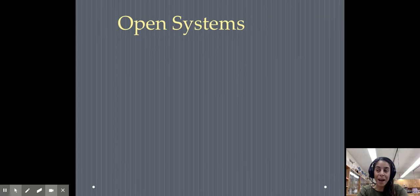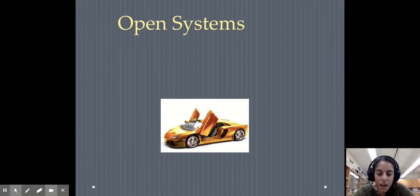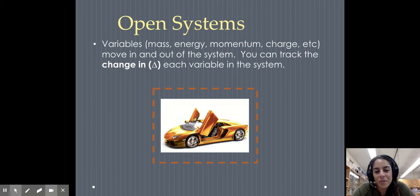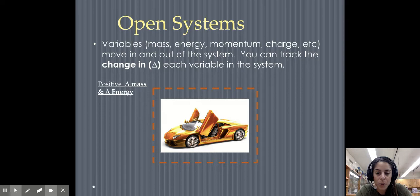Now an open system, different. Matter can enter and exit, or those variables have that freedom to move around. So we've got our fancy car. Let's say we've got an open system here. Mass, energy, momentum, charge, any of those fundamental variables, they can move in and out of the system. So you can track the change or that delta. Remember that triangle means delta or change, in each of those variables in the system.